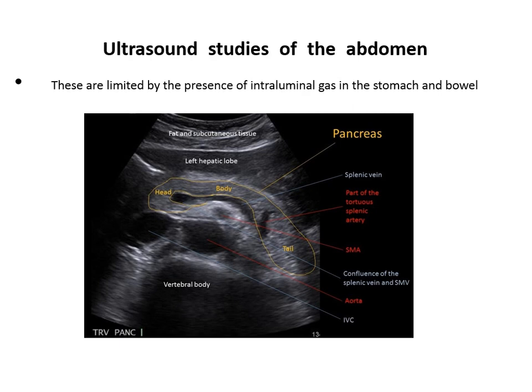On ultrasound of the abdomen, evaluation is limited by intraluminal gas in the stomach and bowel. If the stomach is filled with fluid, structures behind it — the pancreas, aorta, IVC, superior mesenteric artery, and splenic vein — can be seen. If particularly interested in the pancreas, ask the patient to drink a large amount of water before the exam to displace gastric gas. It is better if the patient is fasting first for the gallbladder, then drink water to clear stomach gas.